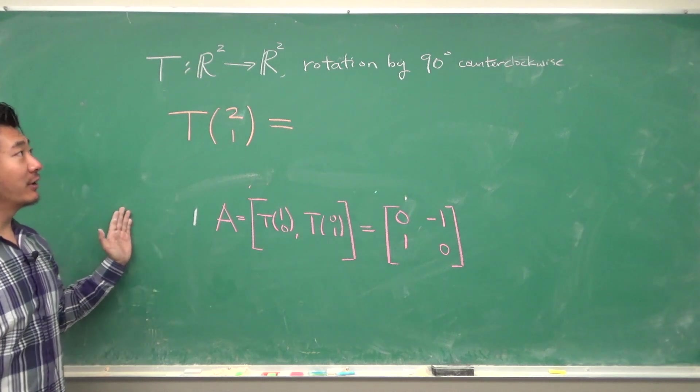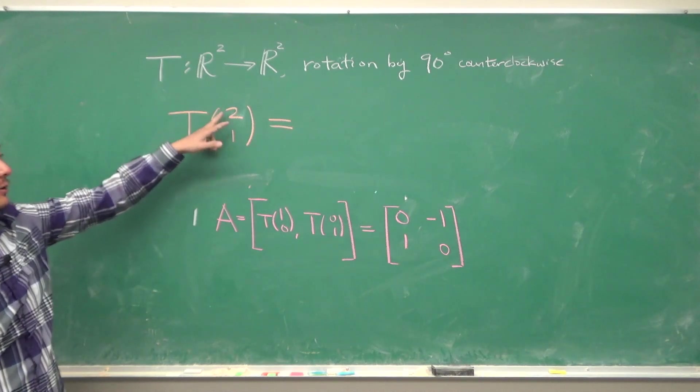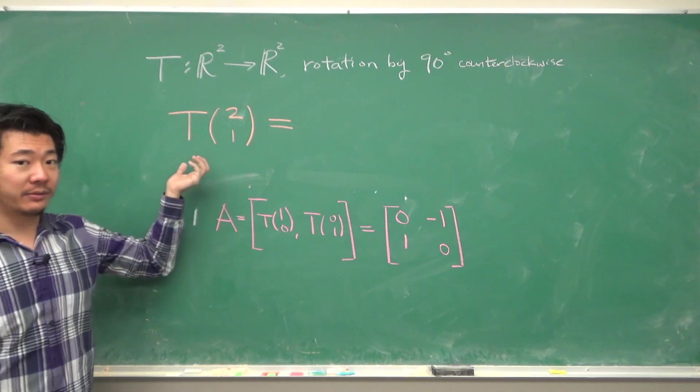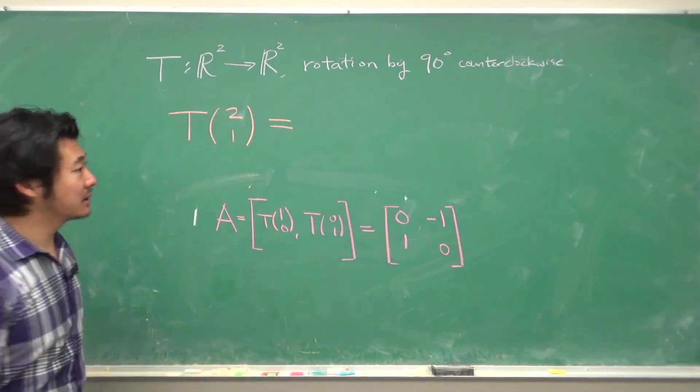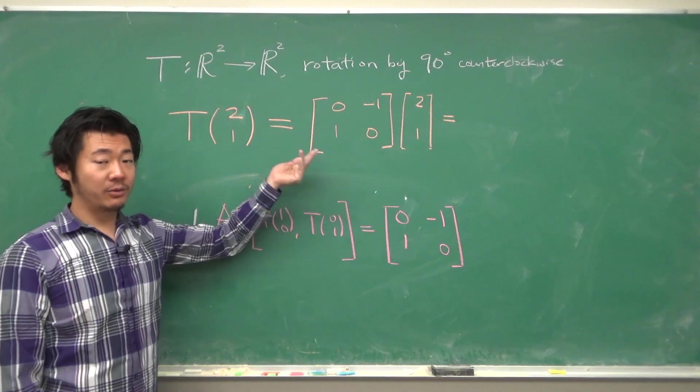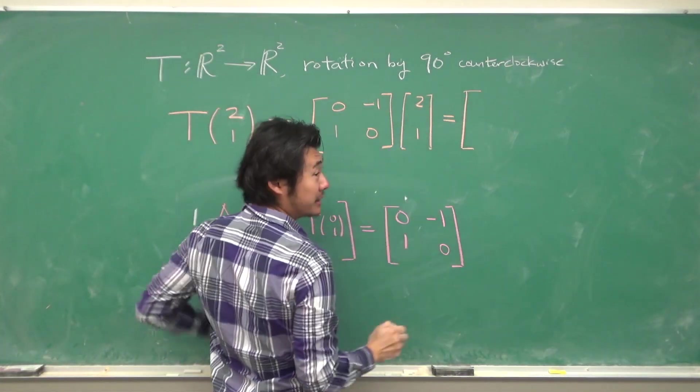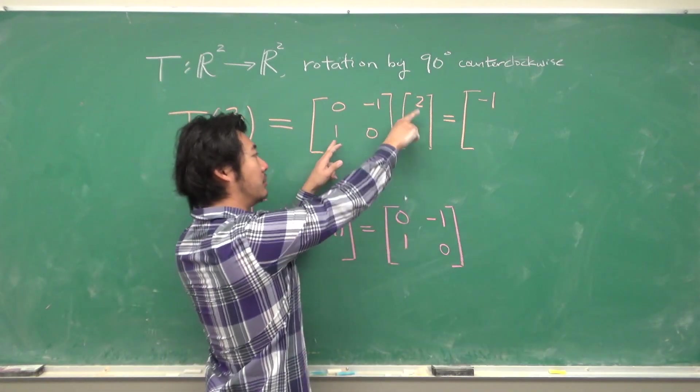Now, instead of figuring out what the output of the vector (2, 1) is, we can apply it to this linear transformation using the standard matrix, this matrix multiplication, which we do row times column, so this is 0 + (-1), and 2 + 0.